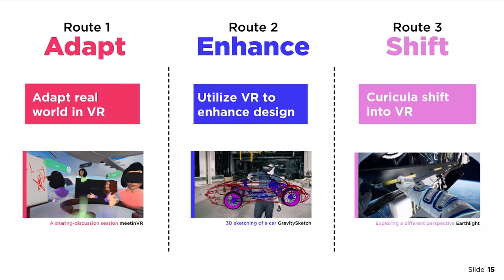The third and final route is SHIFT, where VR becomes the design goal. Newer branches of design such as inborn experience design — UI-UX designed for VR — are within this group. Design educators in this group are usually more forward-thinking and understand the potential in which VR is heading. Curricula from this group are unique and extend across multiple branches of traditional design.